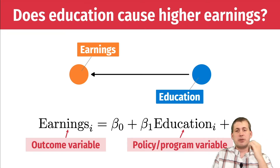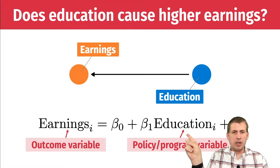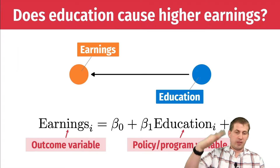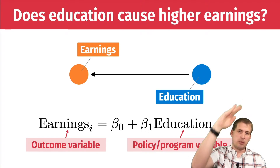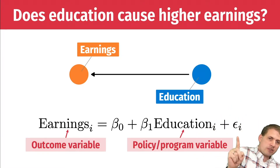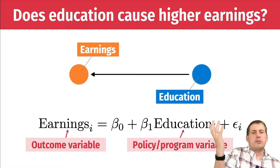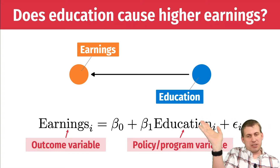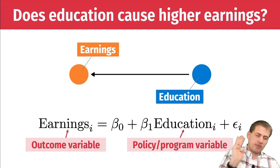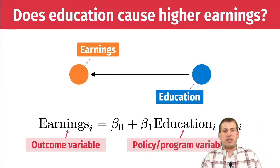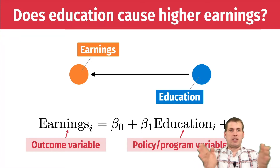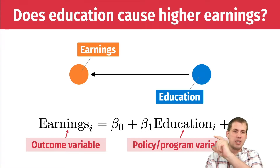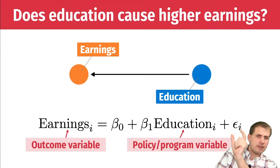The other components of this equation: beta zero is the intercept — that's part of having a linear model, you need the line to cross the y-intercept at some point, and then there's a slope, which is beta one. And then epsilon is the error term — it's all of the stuff that explains earnings that isn't education and that we can't measure. There's not a direct one-to-one relationship between education and earnings; there's a whole host of other things, and all of that other stuff is contained in the error term.